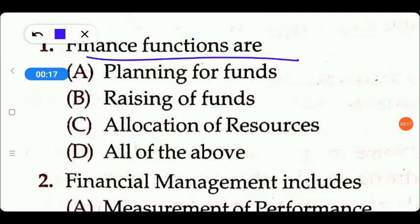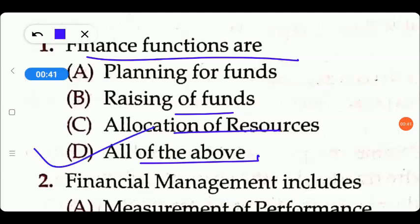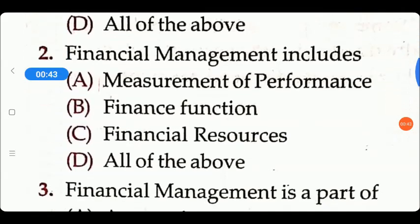The first question is: what are the financial functions? The options are: Planning for Funds, Raising of Funds, Allocation of Resources, or All of the above. When we talk about finance, there is planning, where to raise funds, and we can also do the allocation and better utilization. So option D, All of the above, will be the right answer.